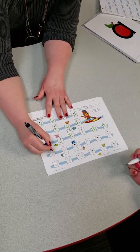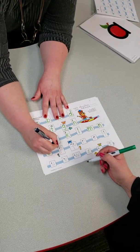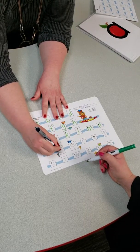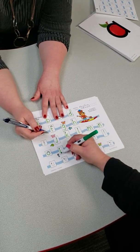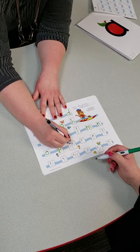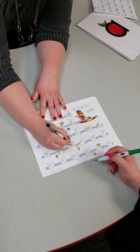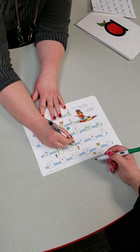N is for nurse. O is for octopus—we're going to go down, up, and around. P is for pig. Q is for queen—around, up, down, kick, and then the U.